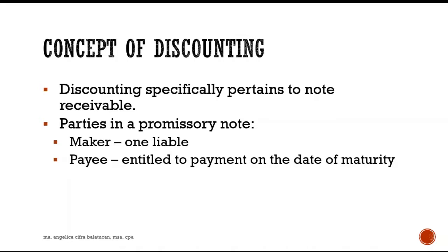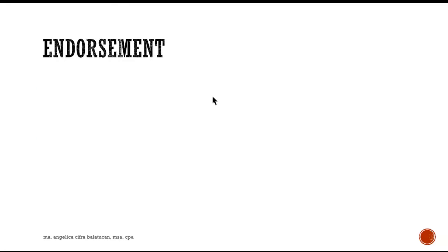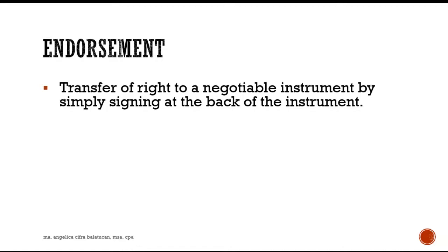So A the maker is the borrower, and B the payee is the lender or creditor. B the payee can get the money even if A the maker has not yet paid. B will go to the bank, present the promissory note of A, and endorse it. An endorsement is a transfer of right to a negotiable instrument by simply signing at the back of the instrument.